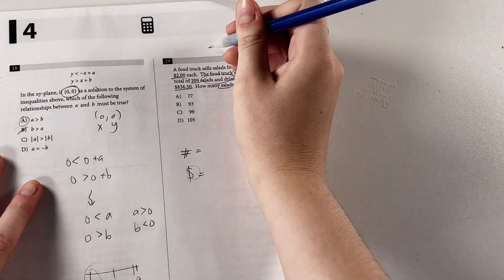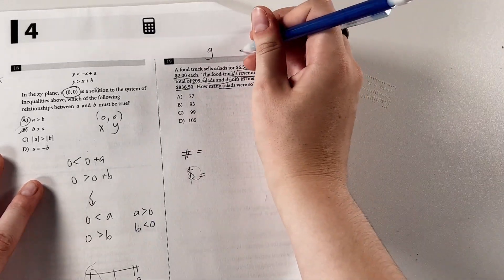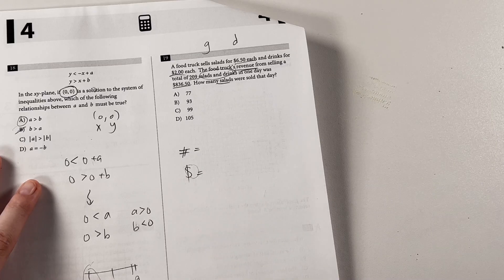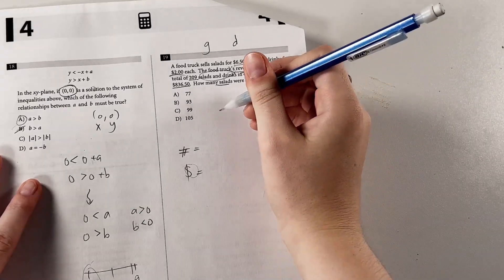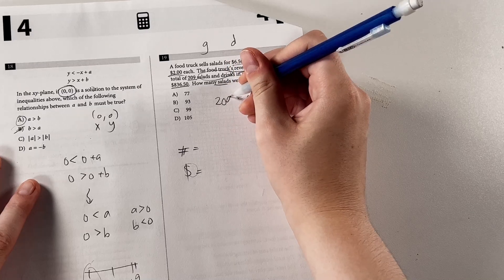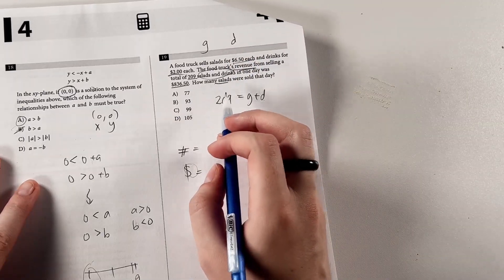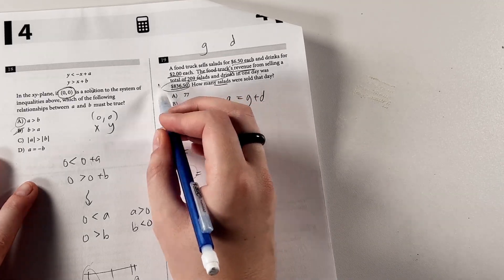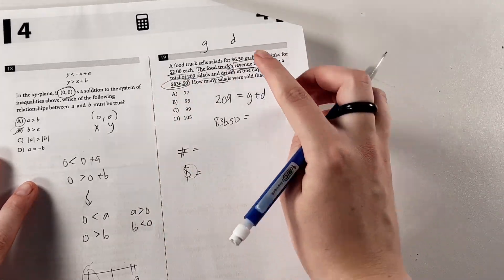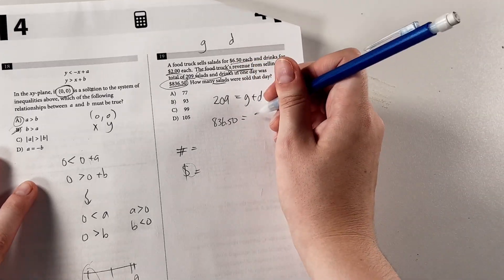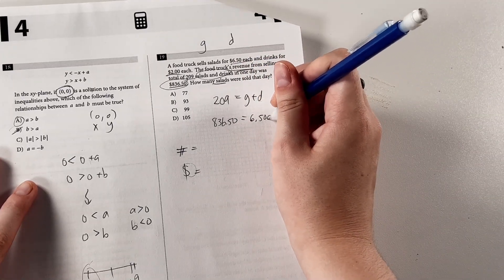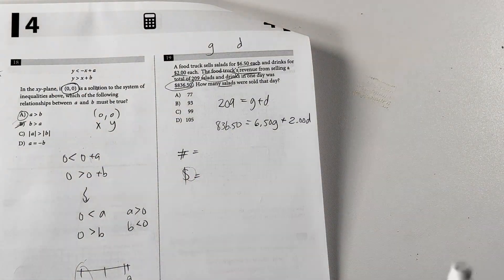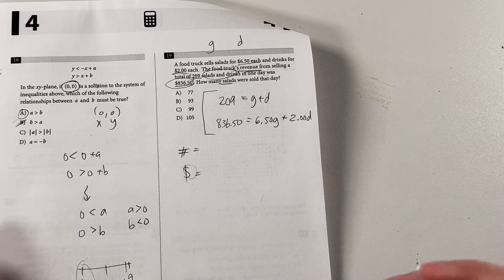Let's first do the simpler equation, the total number of things. We know a total of 209 salads and drinks were sold in one day. Now, I'm going to use the variable g for greens to represent salads, and d for drinks, because s kind of gets confusing. Looks a lot like a 5, and we don't want to get ourselves more confused than we need. So we can just say g plus d equals 209. The total salads and drinks added up is 209. That's our first equation. Then our second one, we know the total revenue for the day is going to be this. And then we know salads sell for 650 each, so 6.50g plus $2 for each drink, and there we go. That equals our total revenue for the day. So those are our two equations. Now, we just have to solve them.